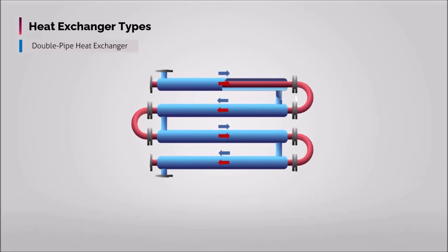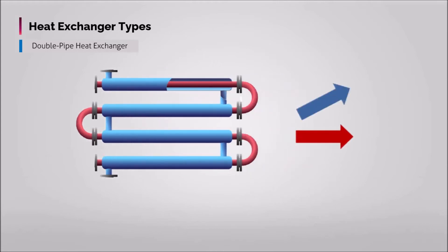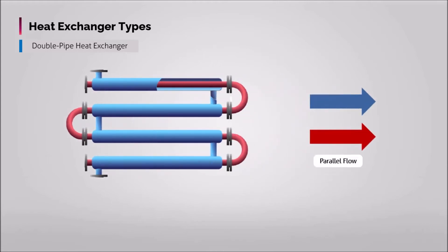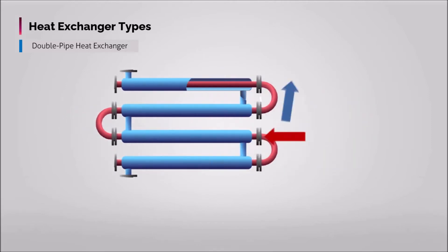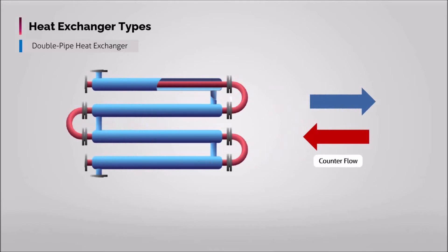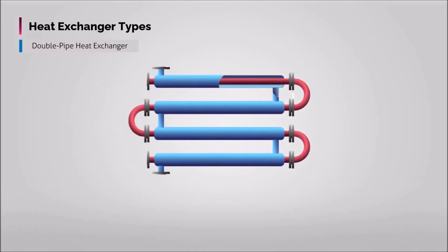There are two possible flow modes in this type of heat exchanger: parallel flow, where both the hot and cold fluids enter the equipment at the same end and flow in the same direction, and counter flow, where the hot and cold fluids enter the exchanger at opposite ends and flow in opposite directions.